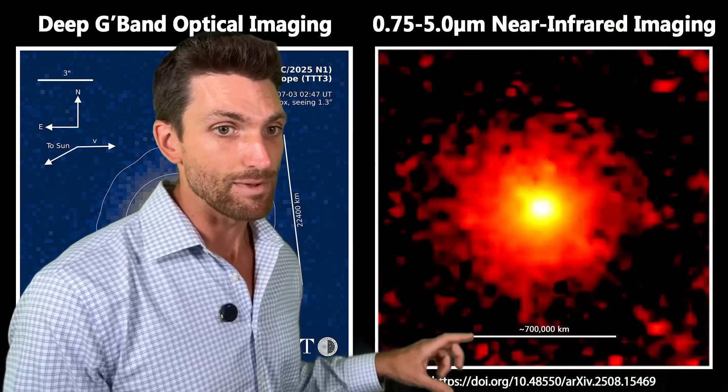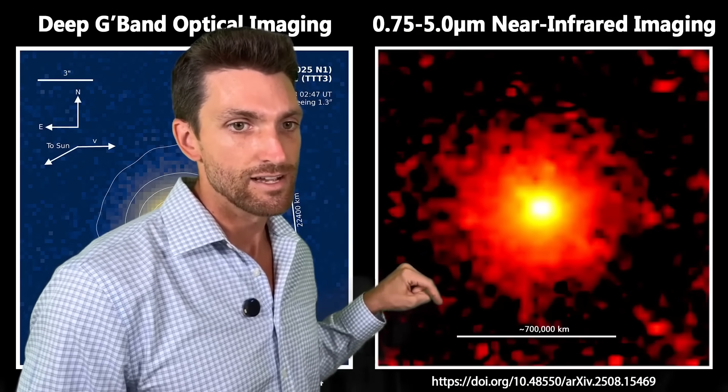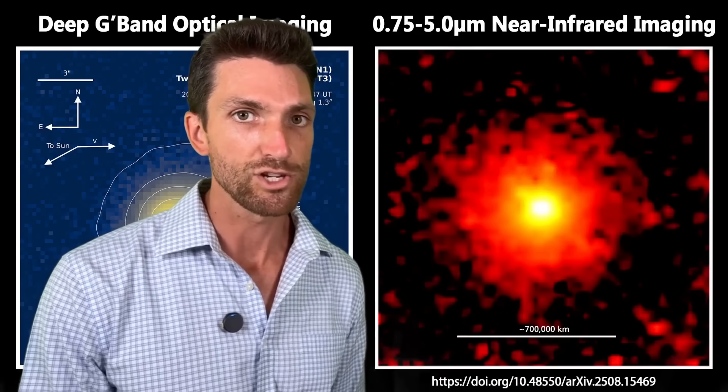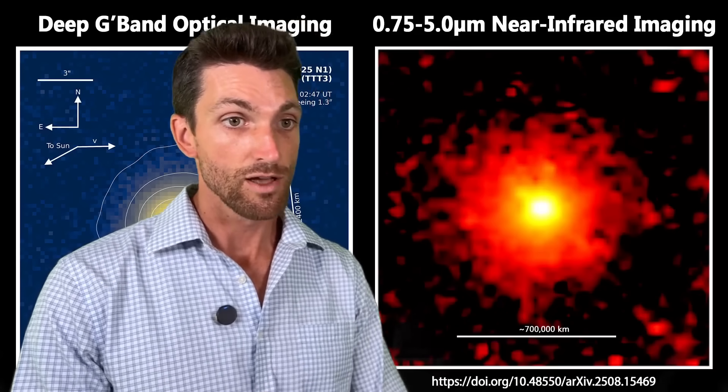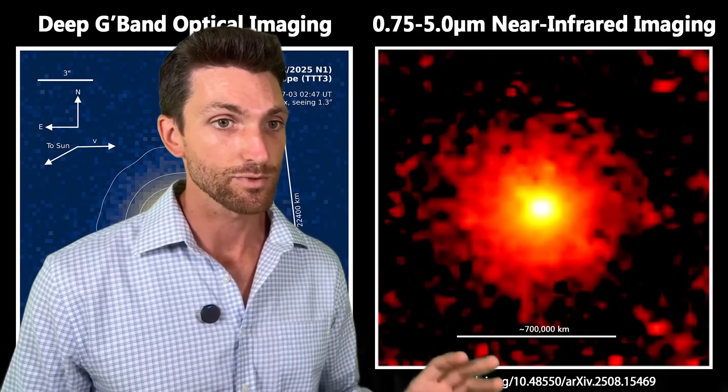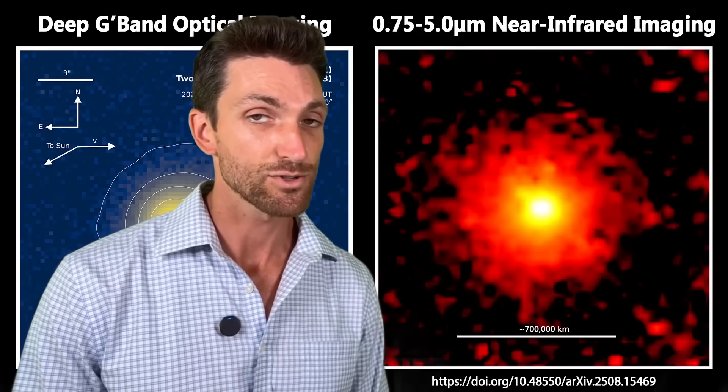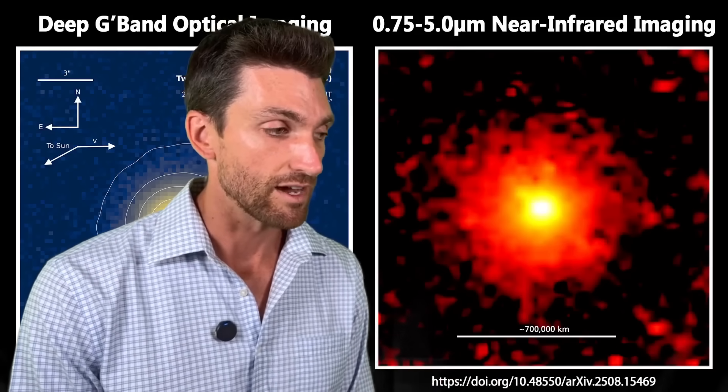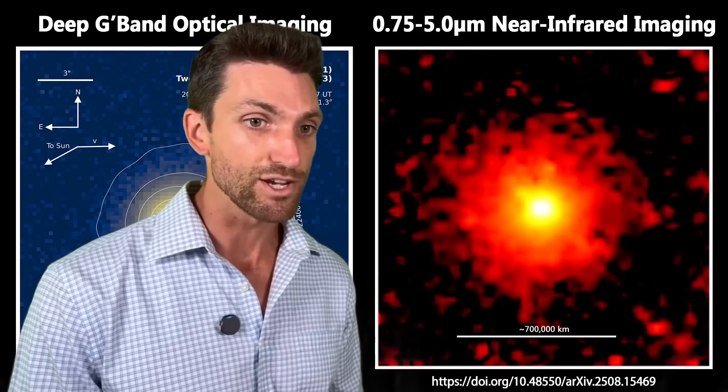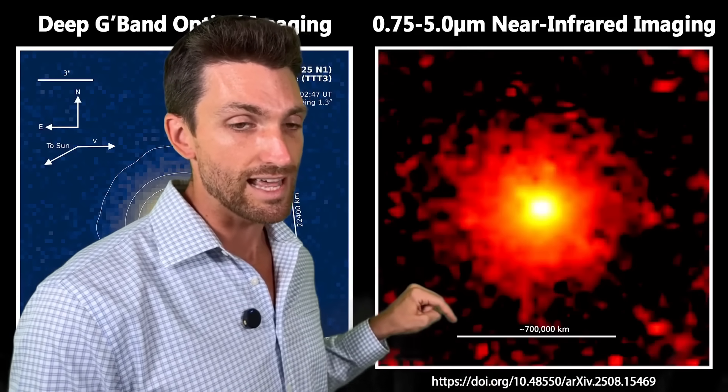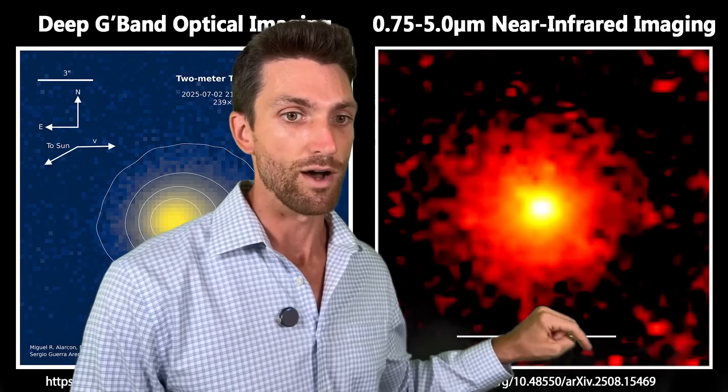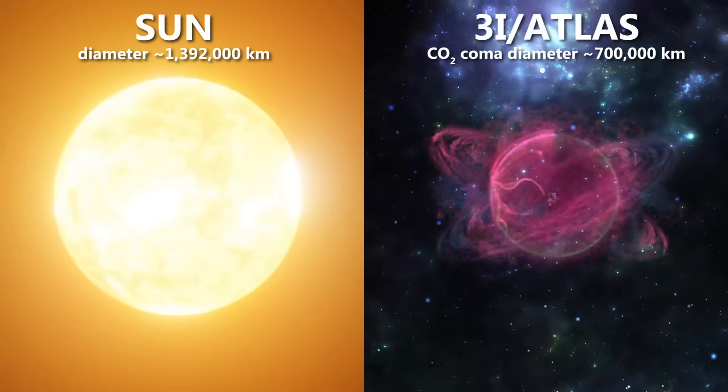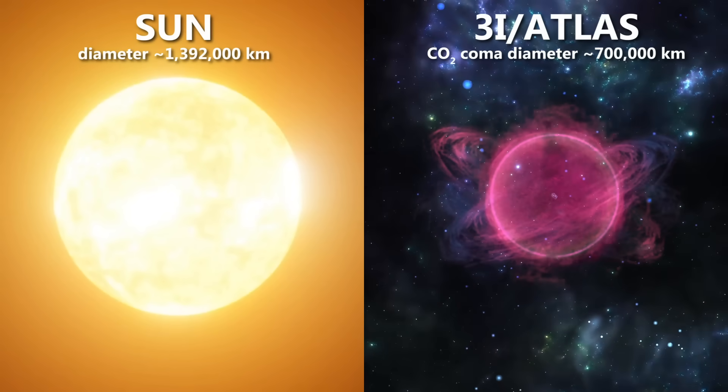If we look at our sphere X image, they estimate that it's CO2 dominant coma. It's about eight to one ratio of CO2 to water, which is very bizarre and anomalous as it relates to comets. Of course, this is an interstellar object or interstellar comet, perhaps. Therefore, it's expected to have different ratios of these things. But we see that it has a huge coma, about 700,000 kilometers in diameter, and that is half the size of the sun.